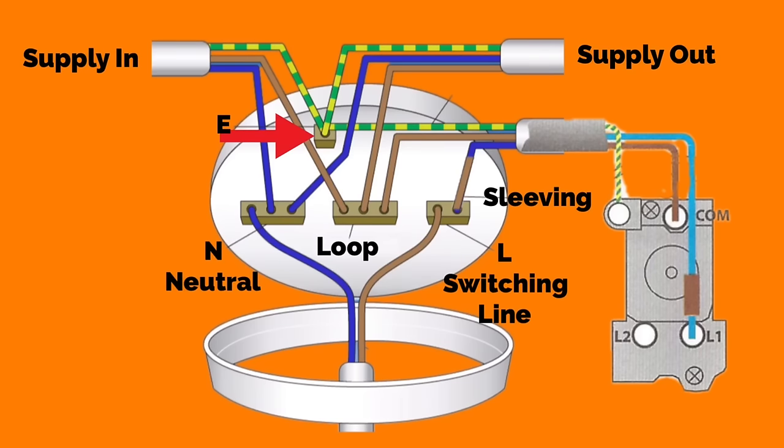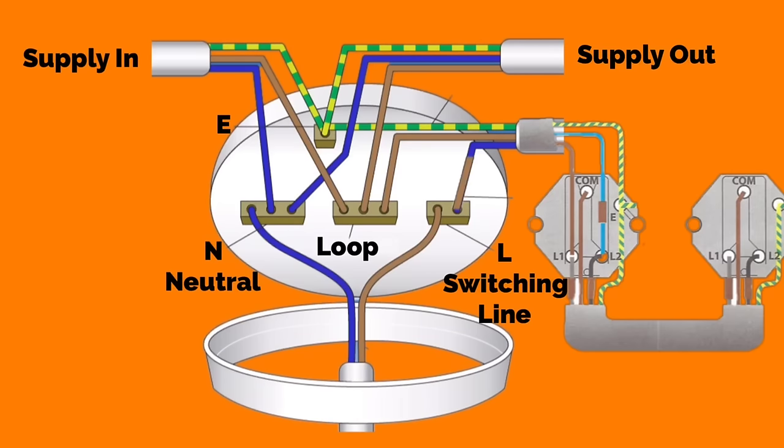It can be easily altered this switch drop now to a two-way or two-way and intermediate switching. The cable which we've shown here for the switch drop for a one-way switch would be identical going down if it was a two-way.